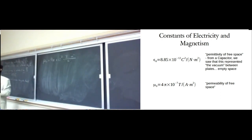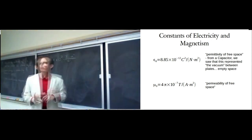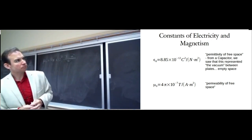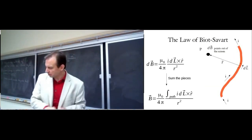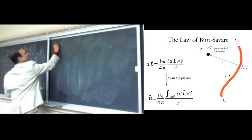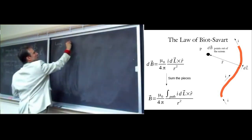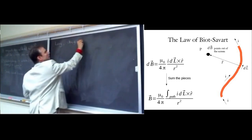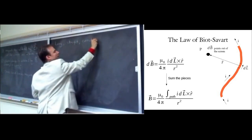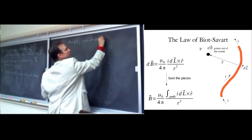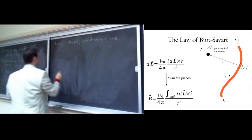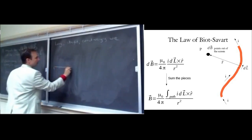Going back to Biot-Savart — let's do an exercise: the magnetic field from a long straight current-carrying wire. Imagine we have a long straight wire that continues on to infinity in both directions — positive infinity and negative infinity — so we don't have to worry about what's happening at the ends. We're at some point P and we're going to try to calculate the magnetic field at that point.